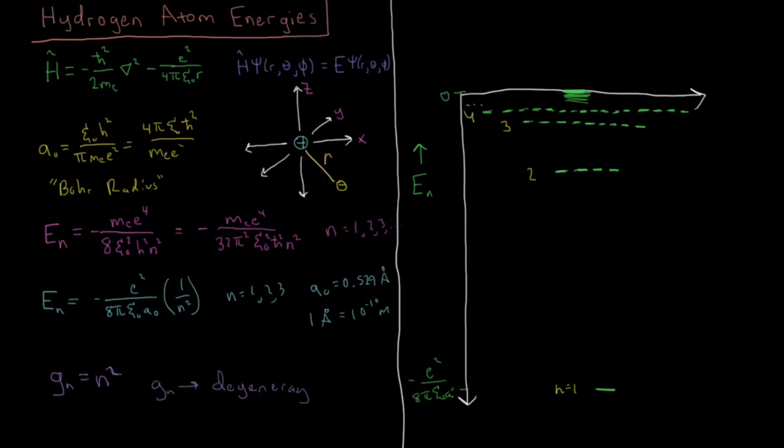So what does this tell us? Well, we can see that there would be transitions if we had from n equals 2 to n equals 1, n equals 3 to n equals 1, or n equals 4 to n equals 1, or any of the higher levels beyond that.